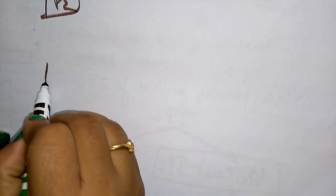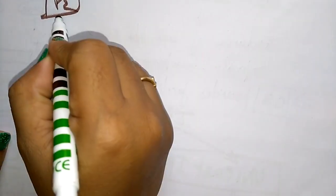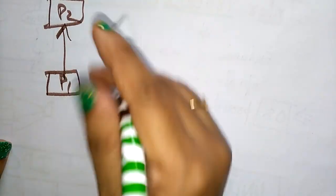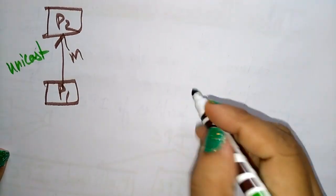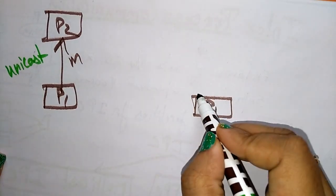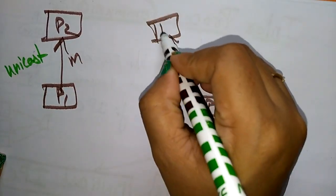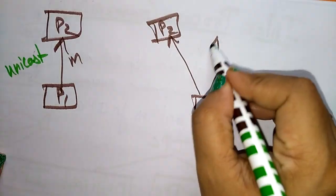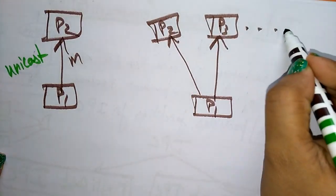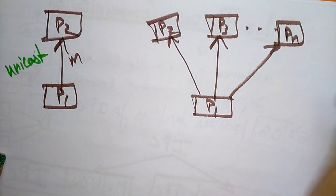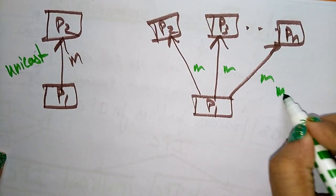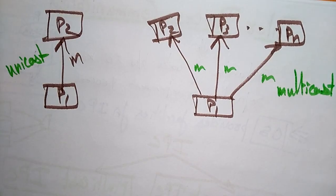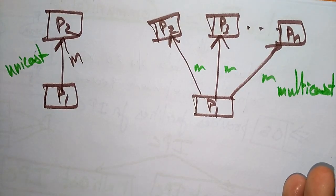Suppose this is process P1 and P2. If communication is established between these two processes, you call it unicast. If process P1 communicates with two or more processes, that type of inter-process communication is called multicast. I hope you understand what unicast and multicast inter-process communication are.